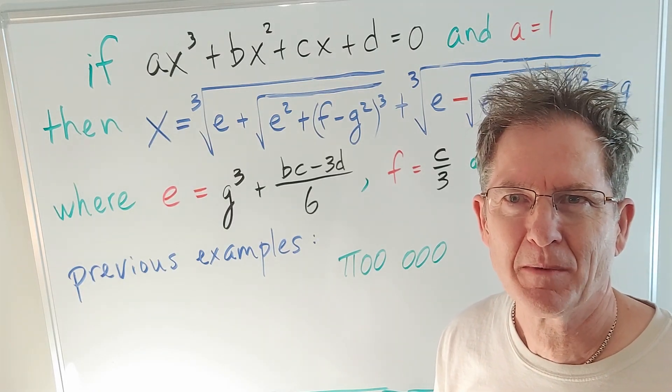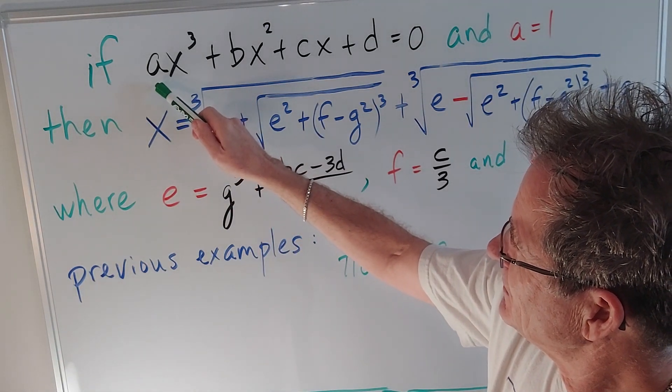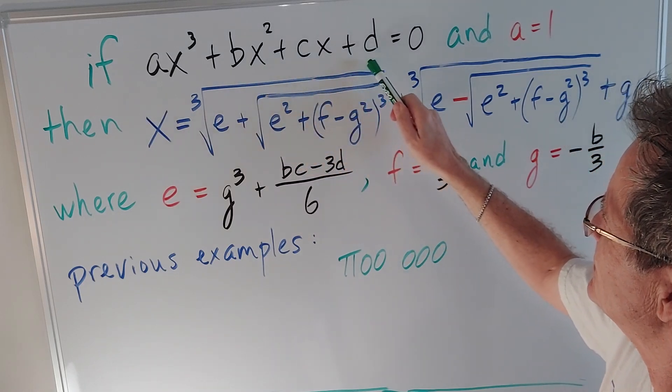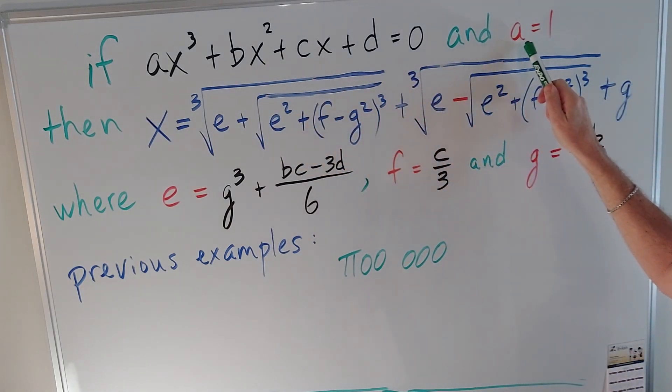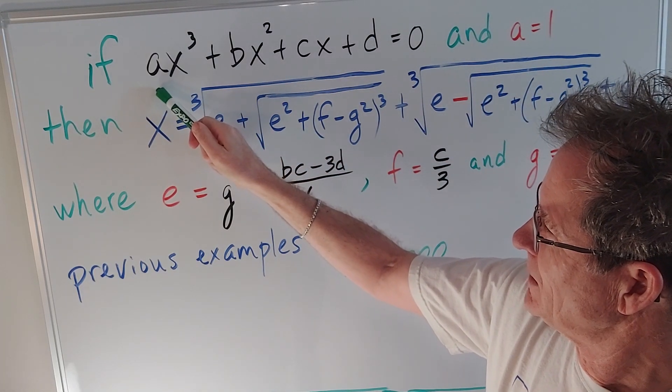So the cubic formula applies to ax³ + bx² + cx + d = 0. And here I'm going to choose a = 1. You can always just divide by a to make it one so we don't lose any generalization.